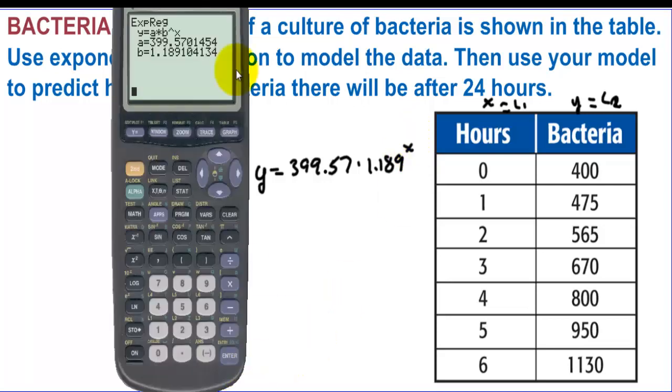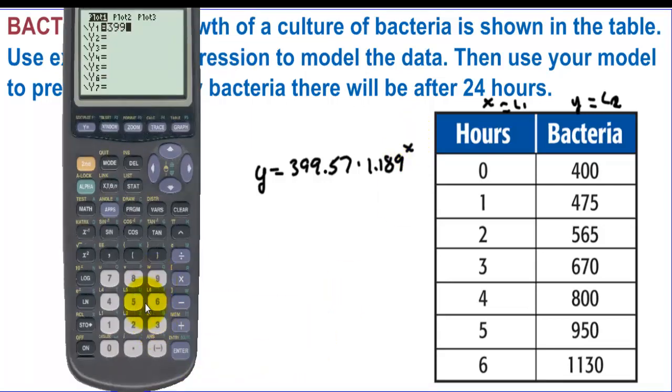Let's type that into the calculator. We have 399.57. And that's times 1.189 raised to the x power. And this curve is supposed to fit our points closely.